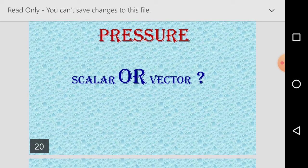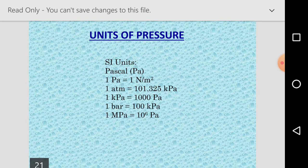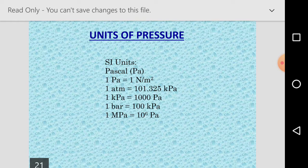Is pressure a scalar or vector? Force is a vector, therefore pressure is also a vector. Units of pressure: it is newton per meter square. One newton per meter square is pascal, kilonewton per meter square is kilopascal, one bar is 100 kilopascal, one megapascal is 10^6 pascal. Gigapascal is also there, so many units of pressure.